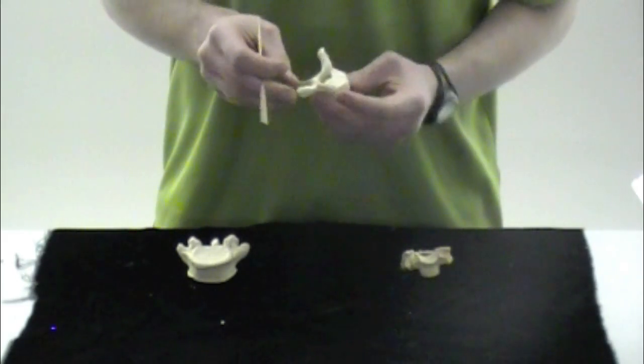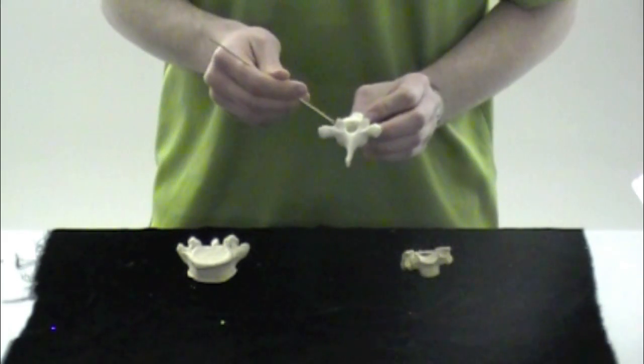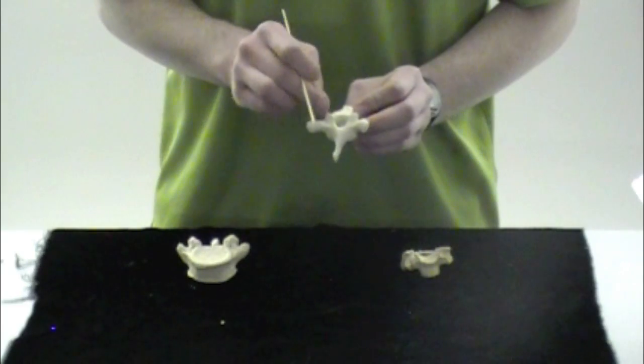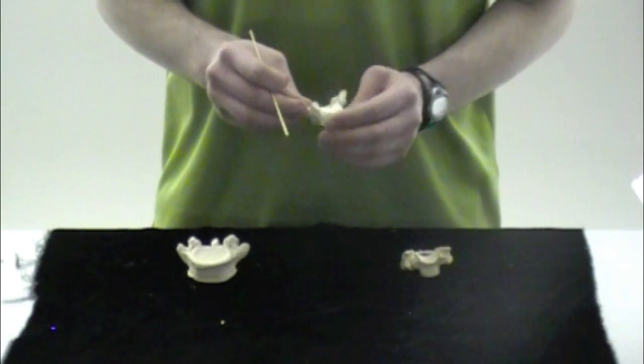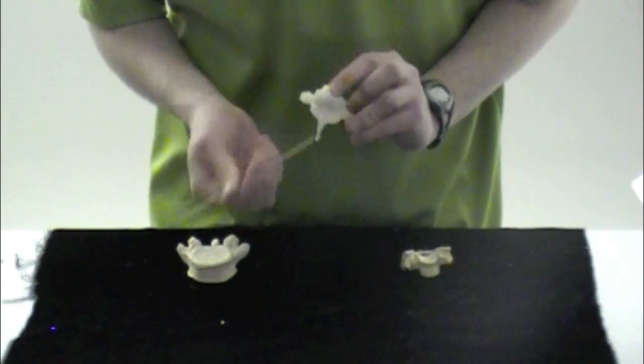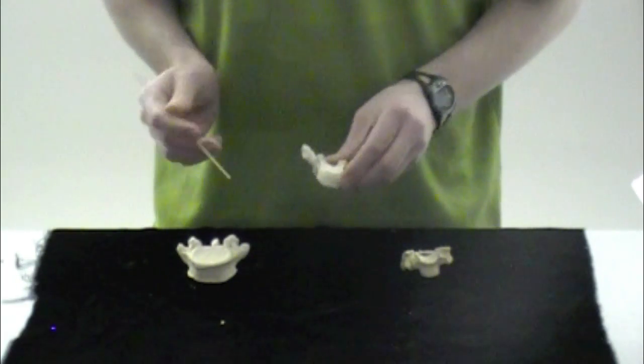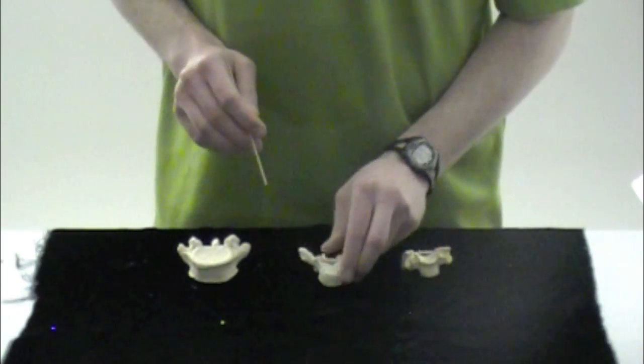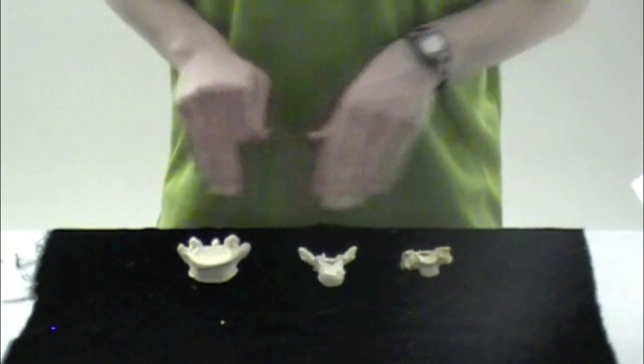We have your superior facets for articulation. That's going to be where the other vertebrae are going to interact with that thoracic vertebrae. Then we're going to have your inferior facets for articulation, where it's going to interact with the vertebrae inferior to it. Those are going to be found on all three types.